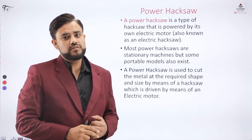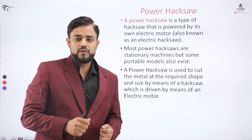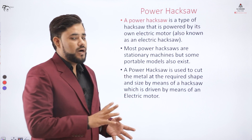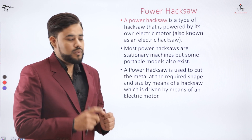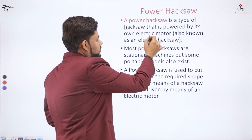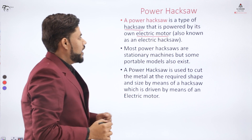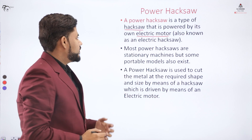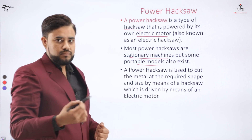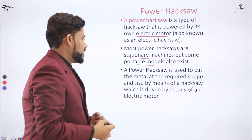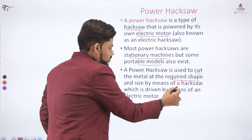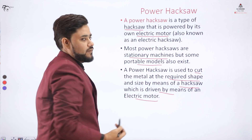In the initial part of the video I showed you the sawing operation in which the operator was performing that operation with the help of his hands. Here, in this type of hex saw, it is basically driven by the electric motor, and when we drive that hex saw with the help of an electric motor we name it as a power hex saw. Power hex saw is generally a stationary machine, but in some models it can be a portable type of setup also, and it is used to cut the metal at the required shape by means of a hex saw driven by the electric motor.